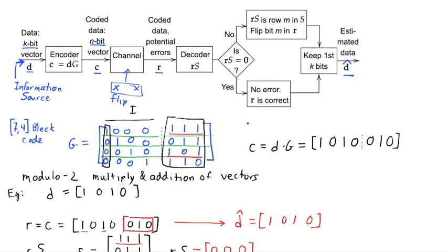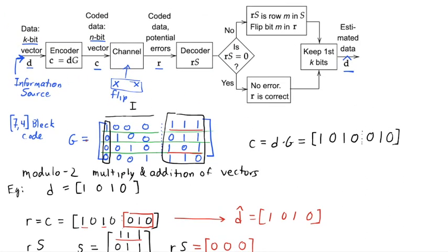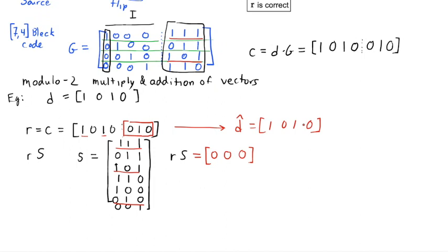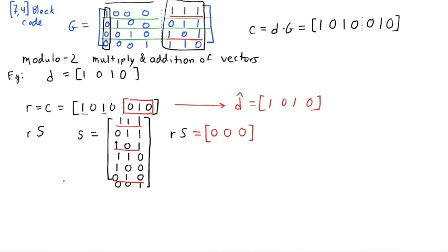That is, in fact, correct, right? I sent a 1, 0, 1, 0. I received now a 1, 0, 1, 0. But you can say that's simple. You didn't make any errors. What would have happened if you had made some errors? Fair question.